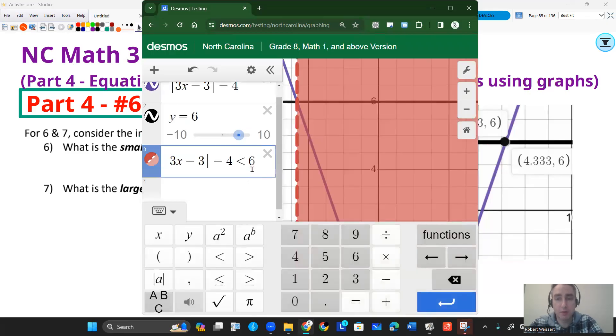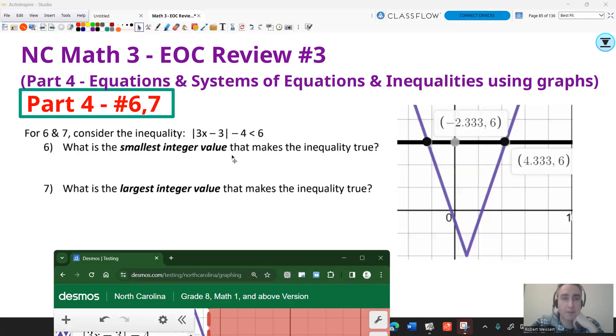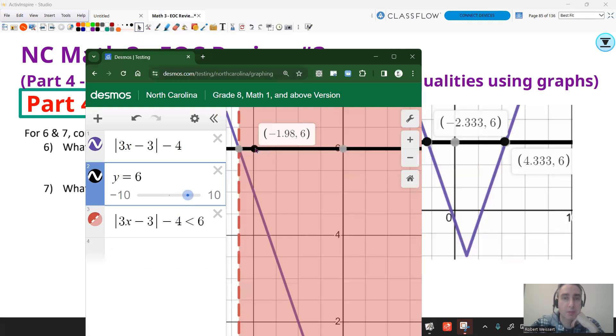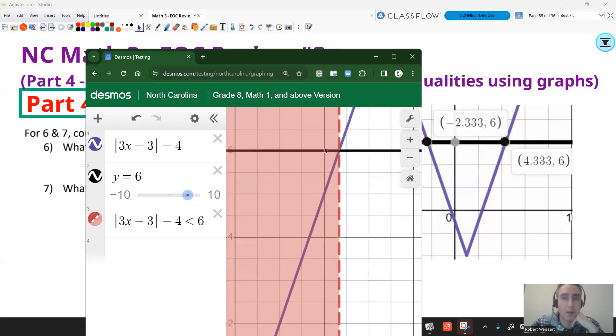So the dashed line means less than. If it were less than or equal to, it'd be a solid line. But again, we had our answers here, -2 on the left side, since that is going to be your smallest integer. And positive 4 on the right side. That's your largest integer.